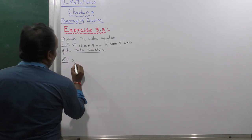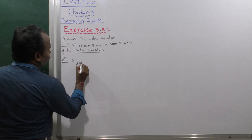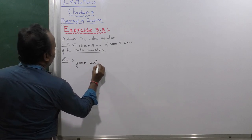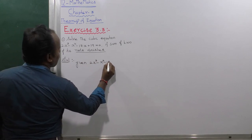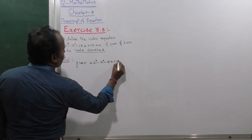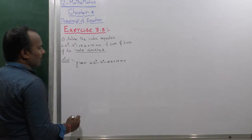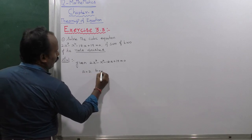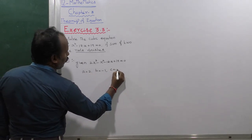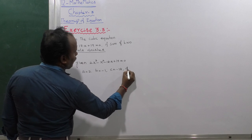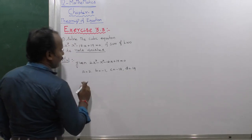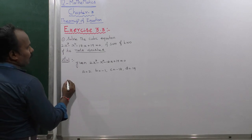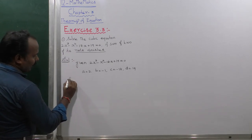Given: 2x³ - x² - 18x + 19 = 0. Here a = 2, b = -1, c = -18, and d = 19. These are the coefficient values for the cubic equation.